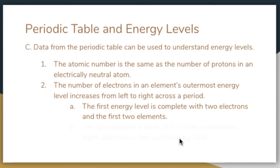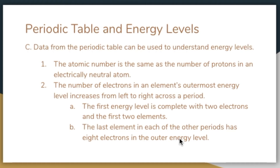The periodic table includes a lot of data about elements and can be used to understand energy levels. The atomic number for each element is the same as the number of protons, and that number of protons equals the number of electrons because an atom is electrically neutral. Therefore, you can determine the number of electrons in an atom by looking at the atomic number above each element's symbol. The number of electrons in an outermost energy level increases as you go from left to right on your periodic table.